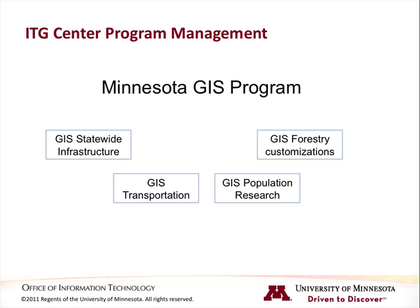Throughout this series of videos, we will use a fictitious program called the Minnesota GIS Program as an example. This program has four projects in it: the primary GIS Statewide Infrastructure project and three related projects.